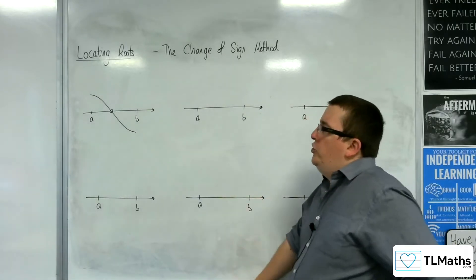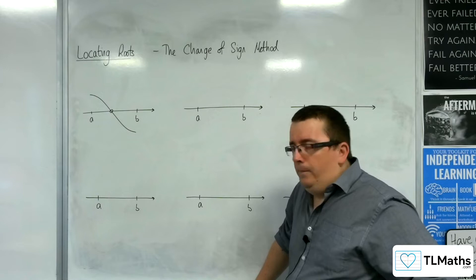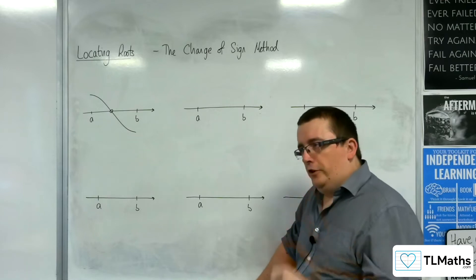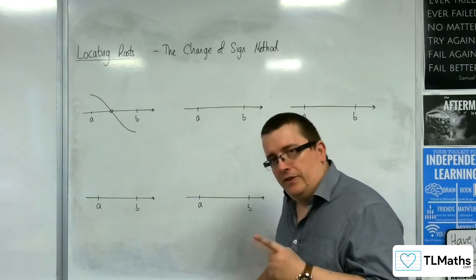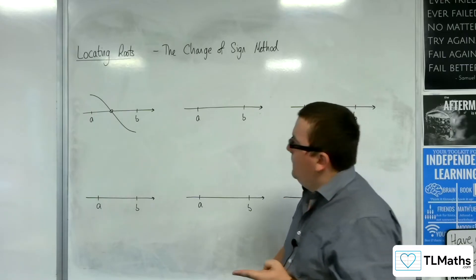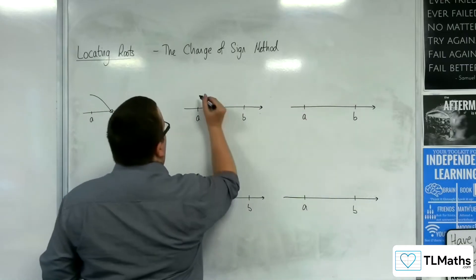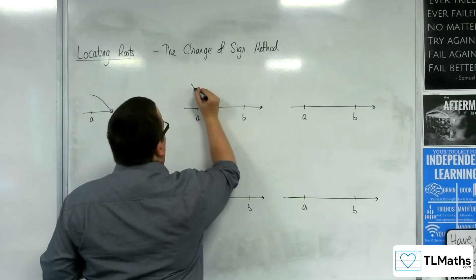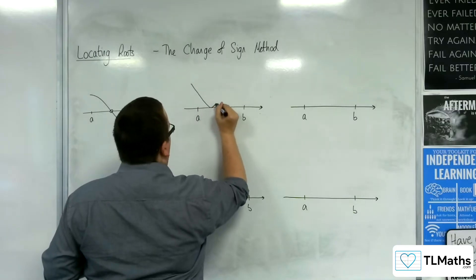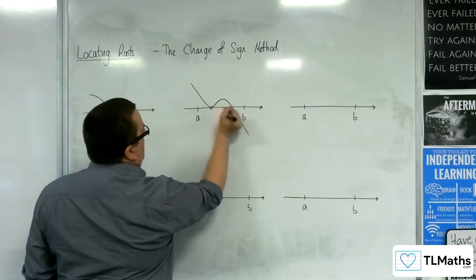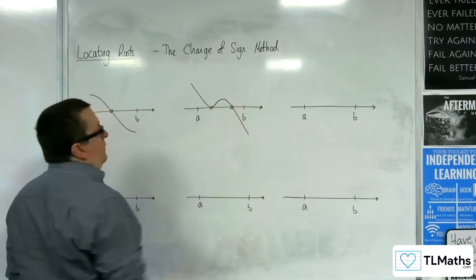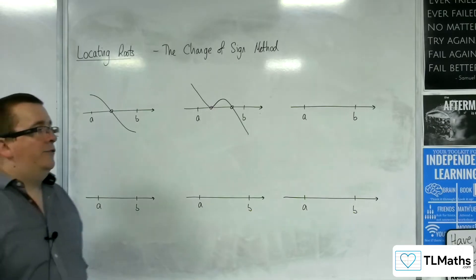Can you draw a situation where there would be two roots? Where you've got a change of sign, the curve is continuous and there are two roots. Well, you'd have to have something that looks like this. It would have to touch the curve once and then come back on itself and through the x-axis. So you can have two roots.